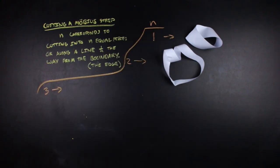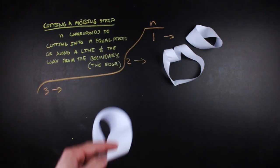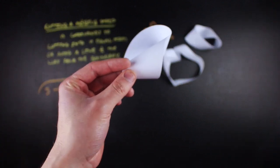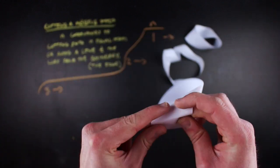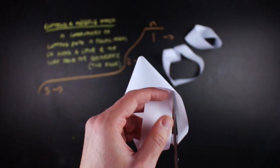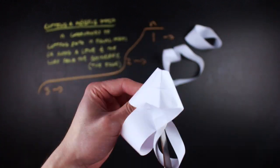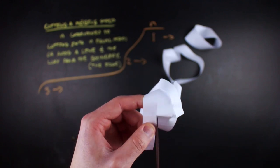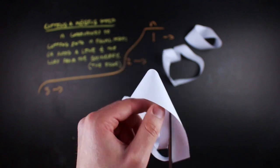When you cut a third of the way down, you get this weird stringy loop, but you also get a Möbius strip linked inside — or rather, attached to — that loop.